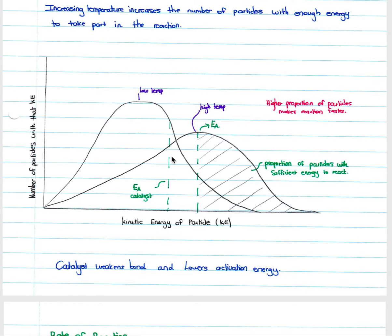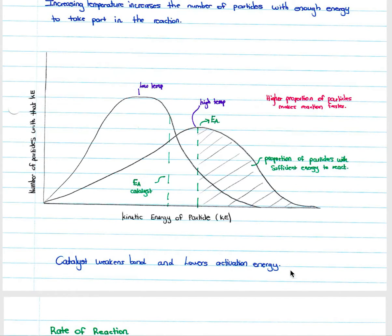With a catalyst, the activation energy Ea is lowered. On the distribution graph, the Ea threshold moves to the left, so more particles in both the low- and high-temperature graphs have sufficient energy to react. A catalyst weakens existing bonds, lowers the activation energy, includes more particles, and therefore increases the rate of reaction.